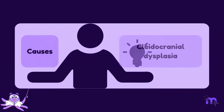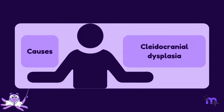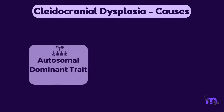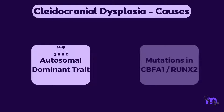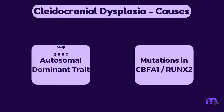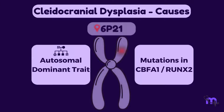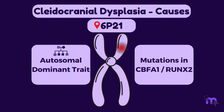Cleidocranial dysplasia is transmitted as an autosomal dominant trait caused by mutations in the CBFA1, also known as RUNX2, gene located on chromosome 6P21.